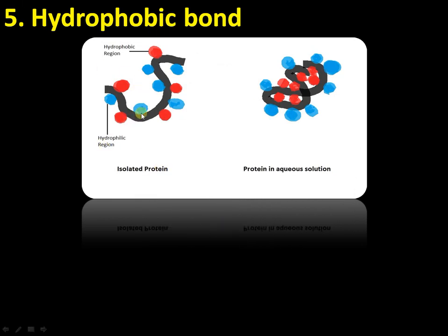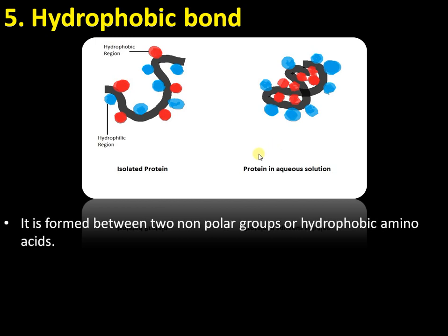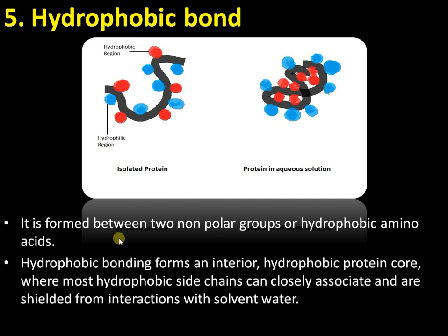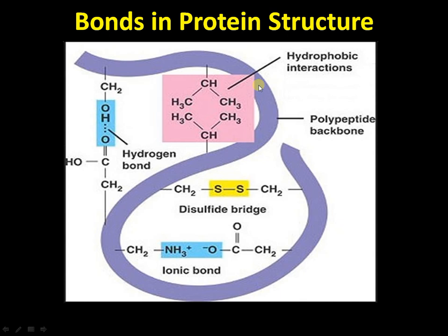Now the final bond — the hydrophobic interaction. In the figure, the blue molecules are hydrophilic regions and the red ones are hydrophobic regions — water-loving and water-hating amino acids respectively. In hydrophobic interactions, the bond is between two non-polar groups or hydrophobic amino acids. These hydrophobic amino acids are arranged in the interior of the protein, excluded from the water molecules outside. Polar amino acids like alanine, valine, and leucine are on the interior side, protected from water. This is a major driving force involved in protein folding.